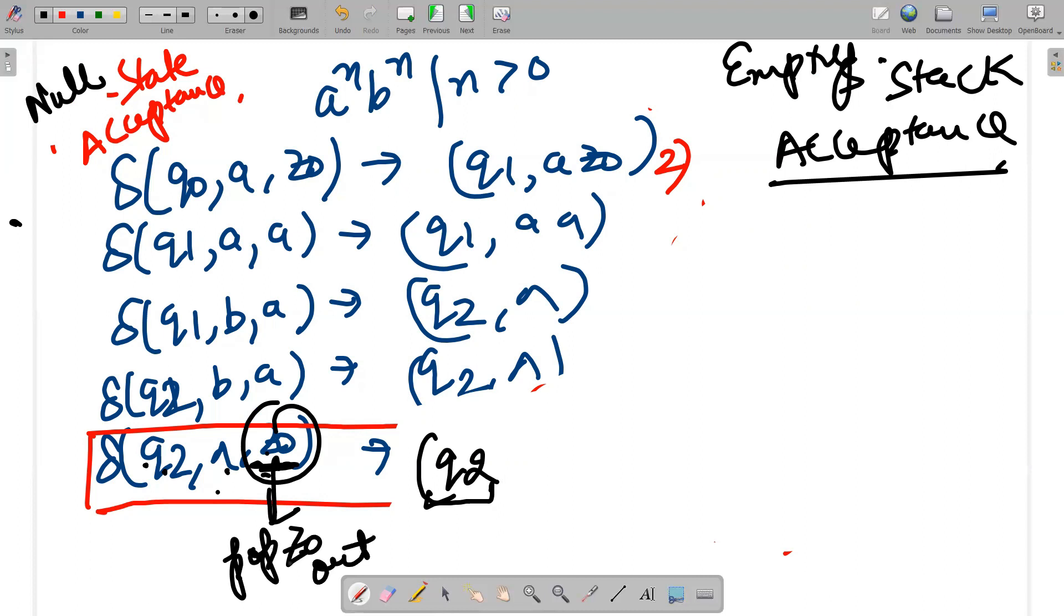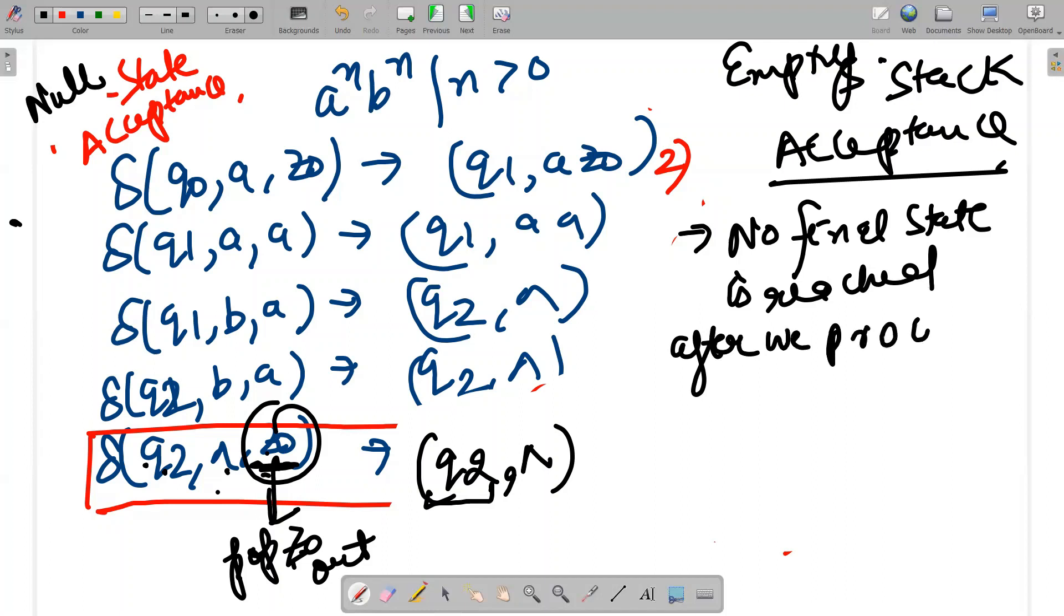If you pop z0 out, it will give you q2, null. Now two things to take away from this: no final state is reached after we process A and B, and the second important thing is z0 is also popped out.